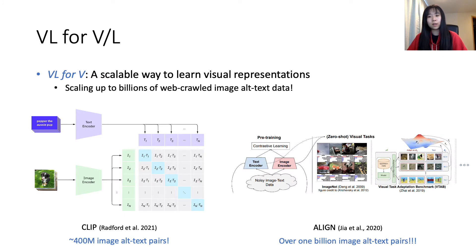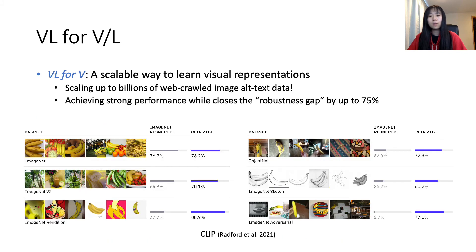Works along this direction quickly scaled up to millions or even billions of web-crawled image alt-text data. OpenAI's CLIP is pre-trained on 400 million image-text pairs, and over a billion data points are later used to pre-train Google's Align. Both CLIP and Align are pre-trained with contrastive learning to learn semantic alignment between image and text. Such large-scale pre-training not only enables strong performance on various vision tasks, but also closes the robustness gap by up to 75%, suggesting that vision-language for vision is a promising direction.